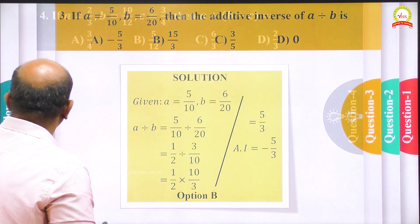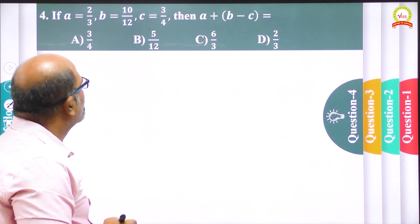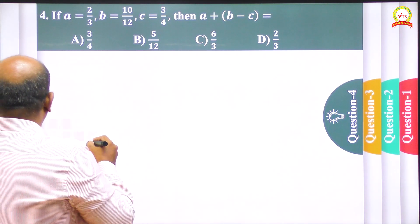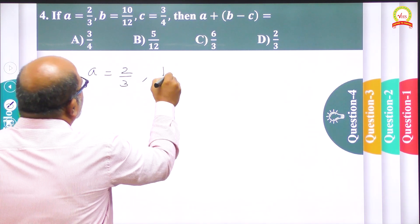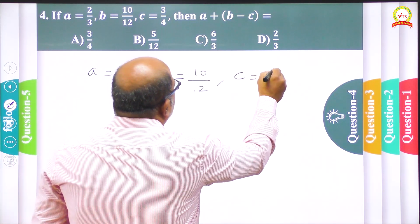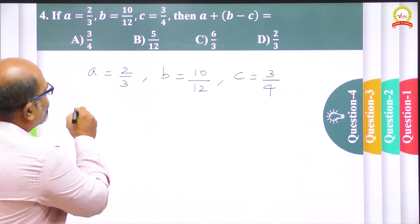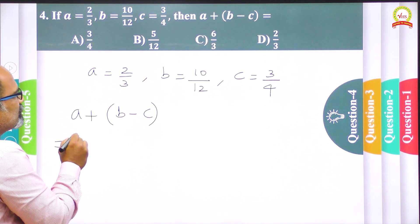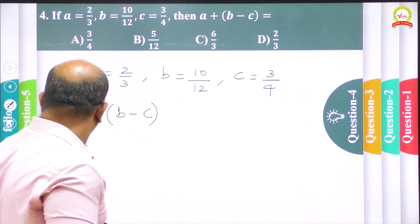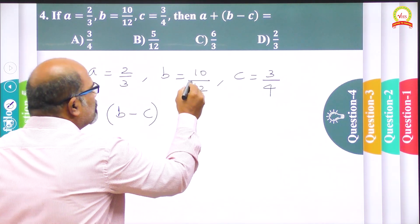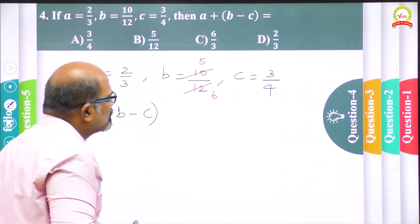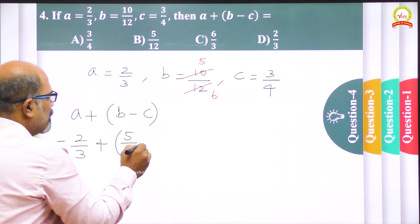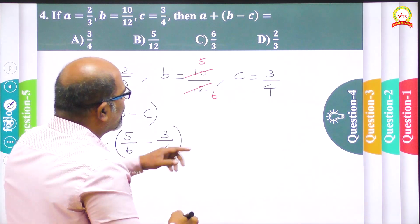Now going to the fourth question. If A = 2/3, B = 10/12, and C = 3/4, find the value of A + B − C. I take the given values: A = 2/3, B = 10/12, and C = 3/4. I want to find A + B − C — be careful, it is B minus C, not B plus C. I can see that 10/12 has common factor 2, so I simplify it to 5/6. The value 3/4 is already in standard form.